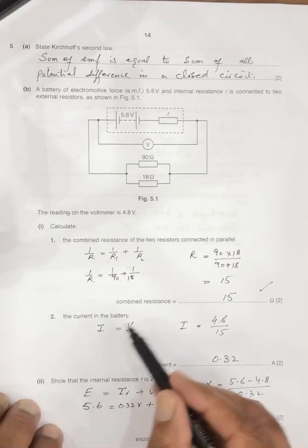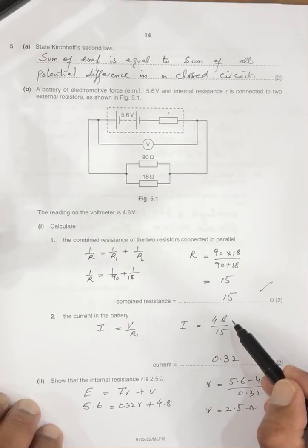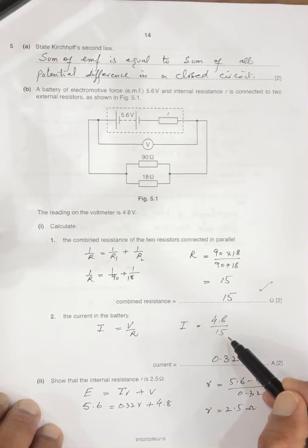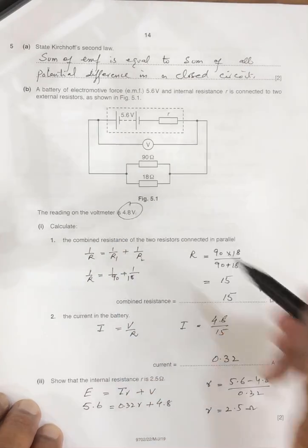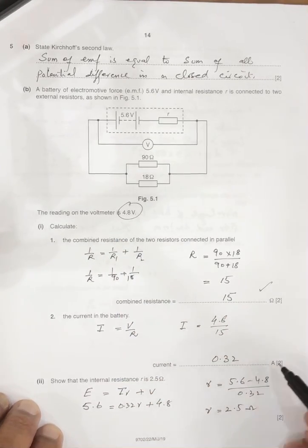The current in the battery, I is equal to V by R. So V is 4.8 and the R is 15. So the answer, look, 4.8 is given, the reading on the voltmeter. So this is the terminal potential divided by 15, so 0.32.